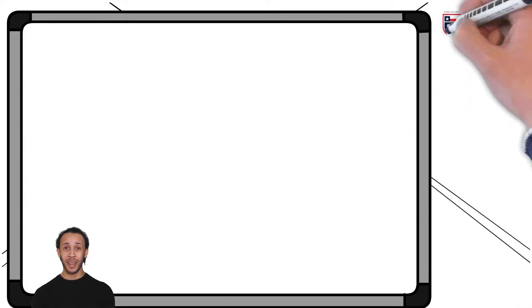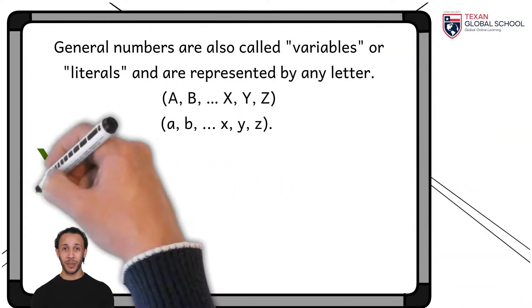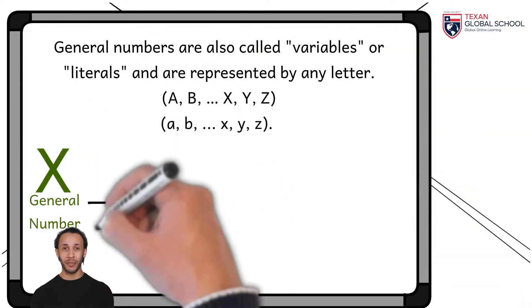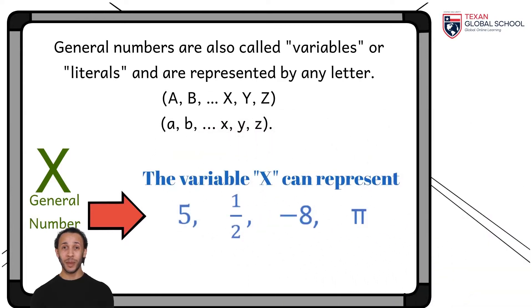As shown in the example, the variable x can represent any value such as 5, a half, minus 8, or even the irrational number pi.